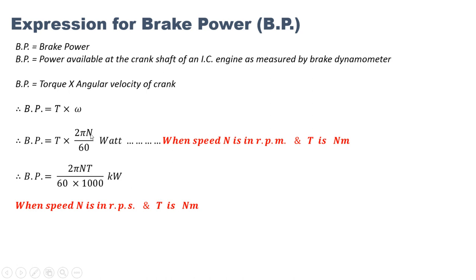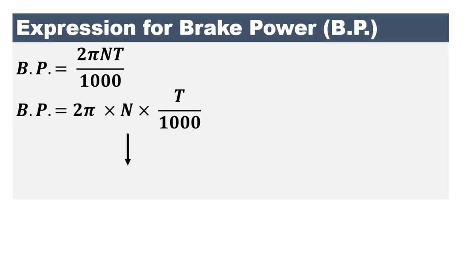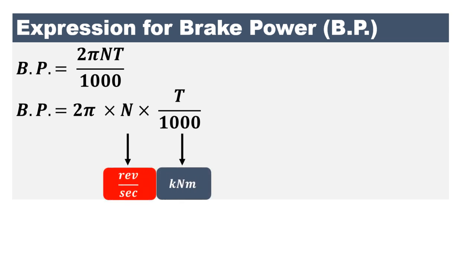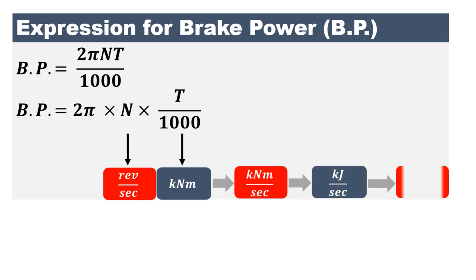When speed N is in rpm and torque is in Newton·meter, the result is in watt. Dividing torque by 1000 converts it to kiloNewton·meter, giving kilowatt. If speed is directly in rps, there is no need to divide by 60, so brake power equals 2πNT/1000 kilowatt when N is in rps. Torque in Newton·meter divided by 1000 gives kiloNewton·meter per second, which is kilojoule per second — that is kilowatt.